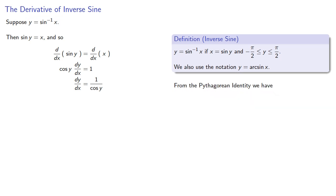So from the Pythagorean identity we have, but x equals sine y, and we do have to choose which square root.